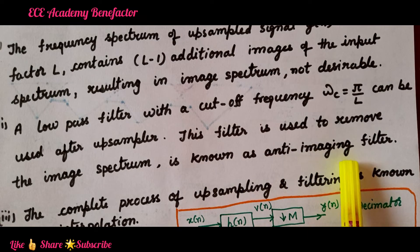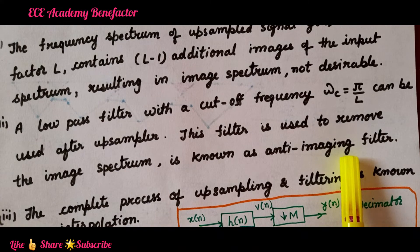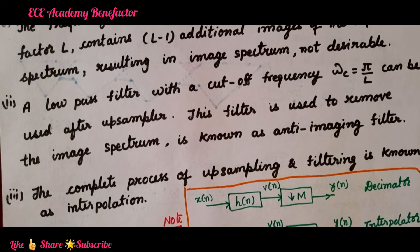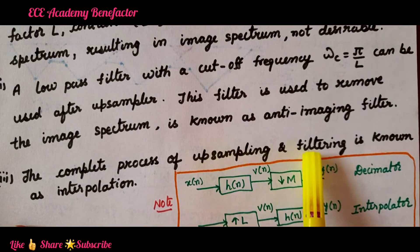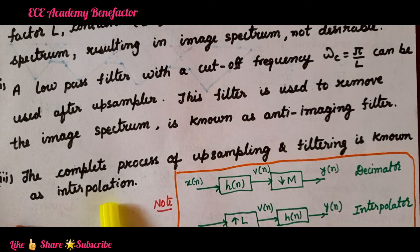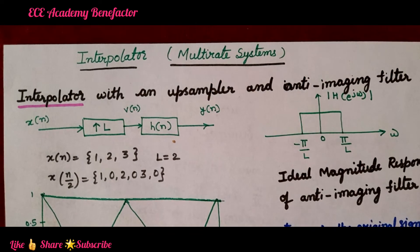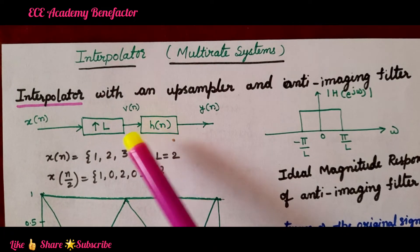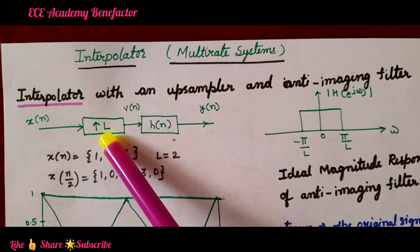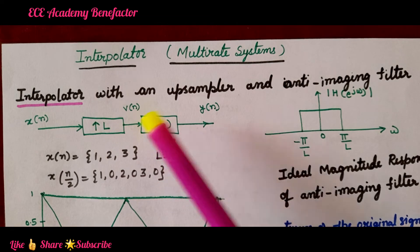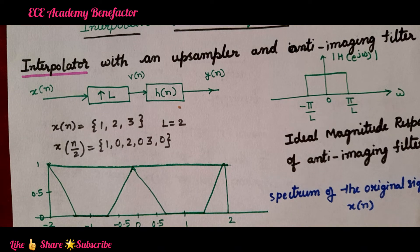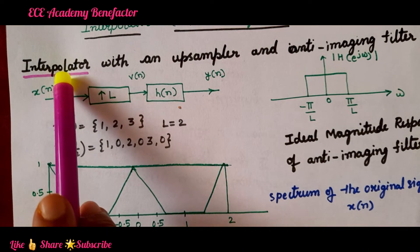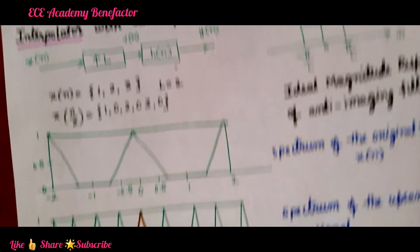After upsampling we need to place an anti-imaging filter to avoid the image spectrum. The complete process of upsampling and filtering is known as interpolation. After upsampling we are doing filtering. The complete process of upsampling and filtering is known as interpolation. Interpolation is a process and interpolator is a device.